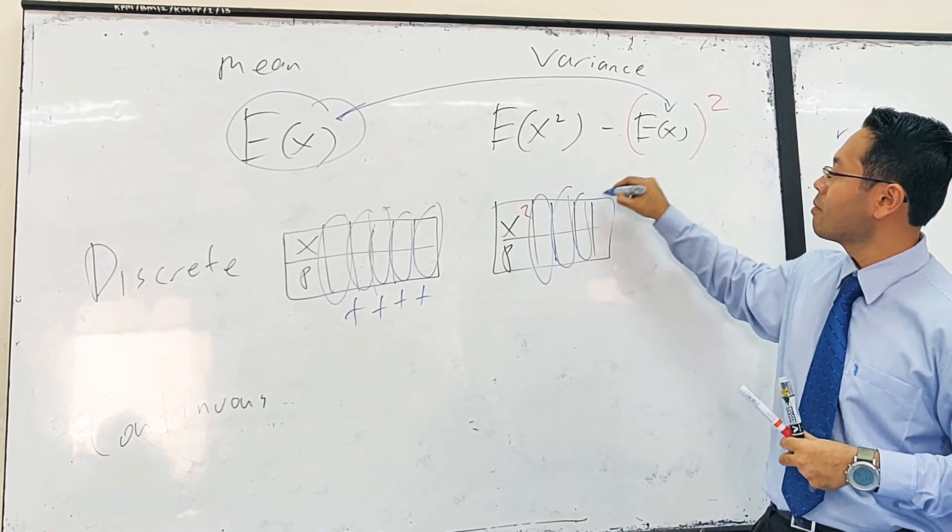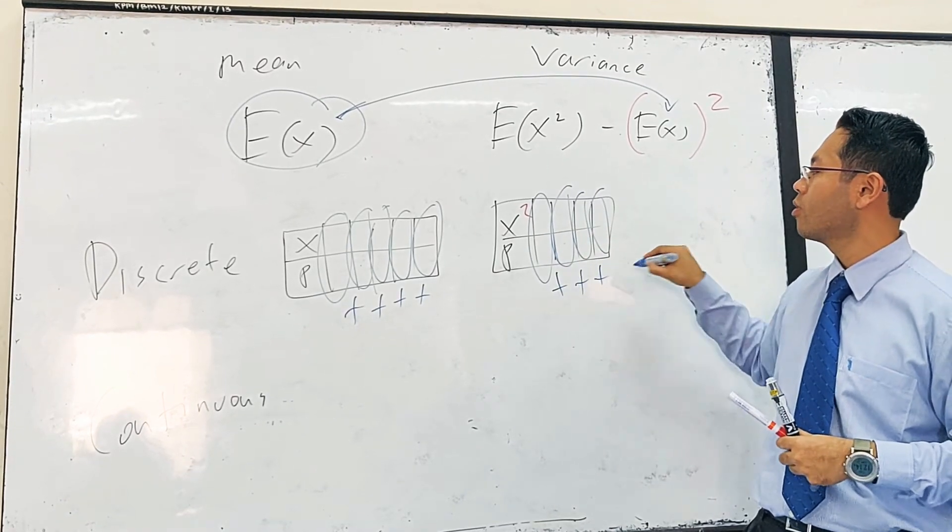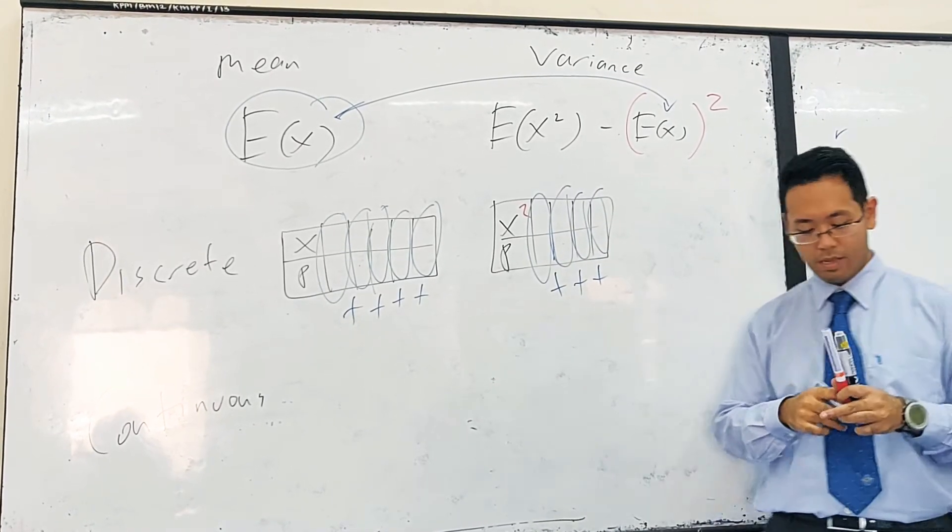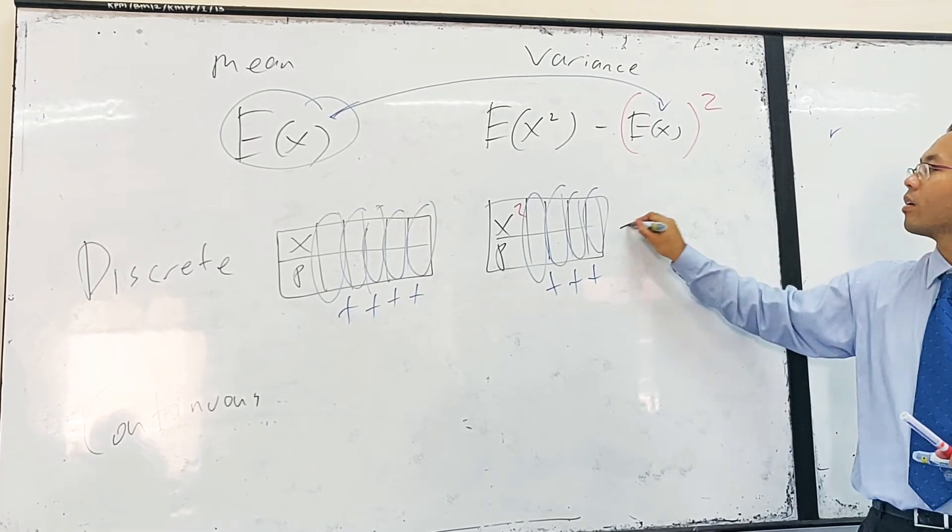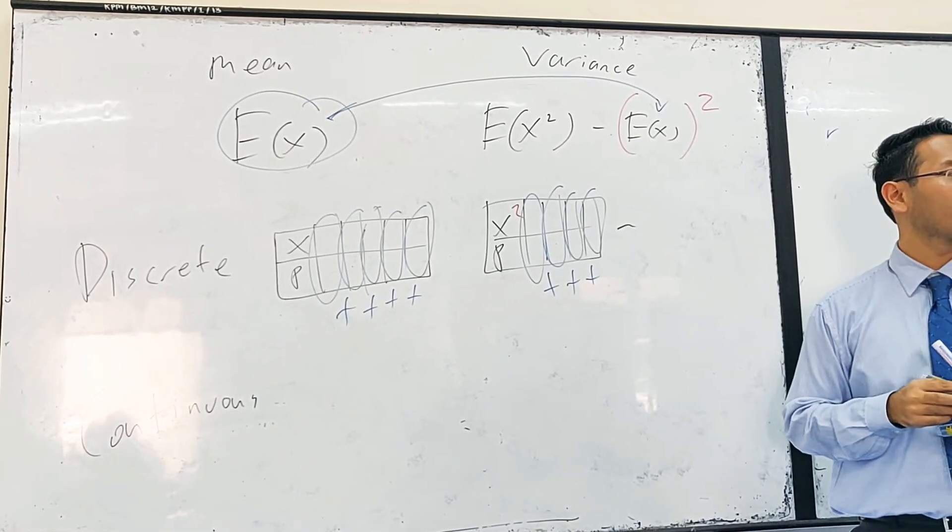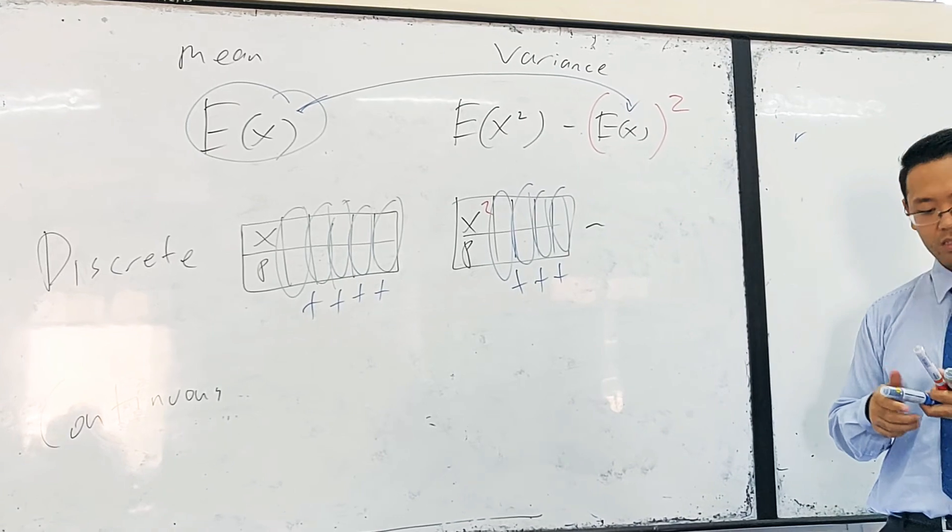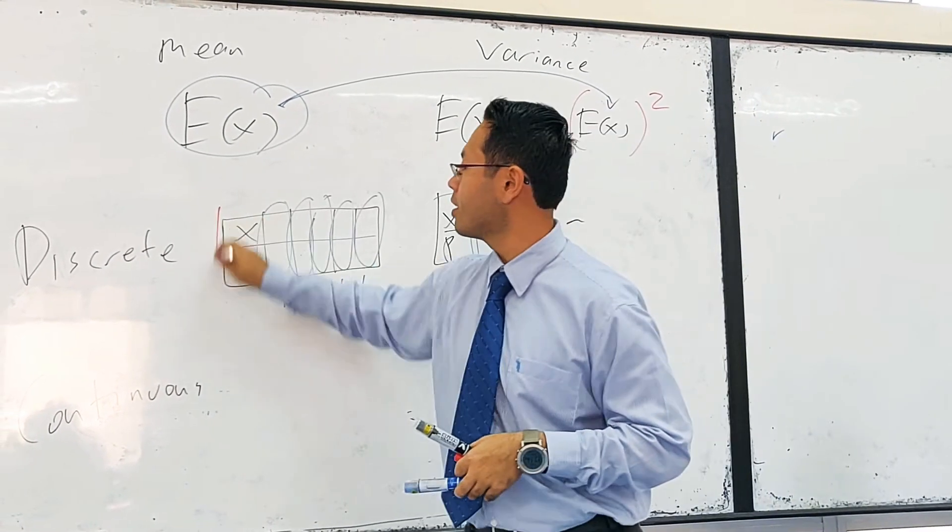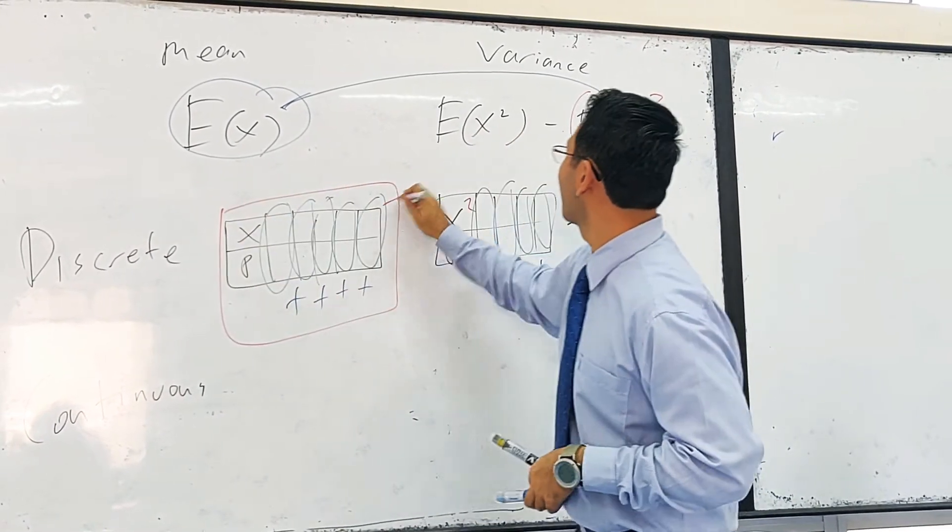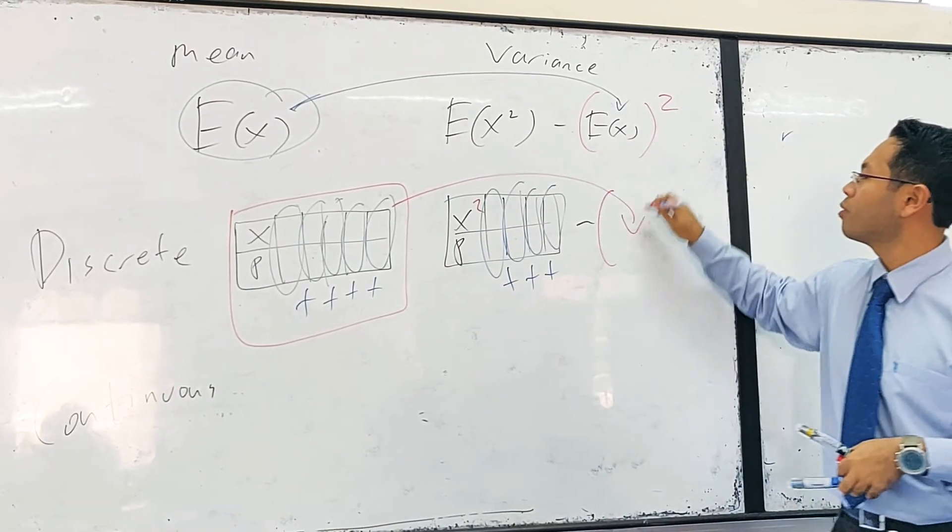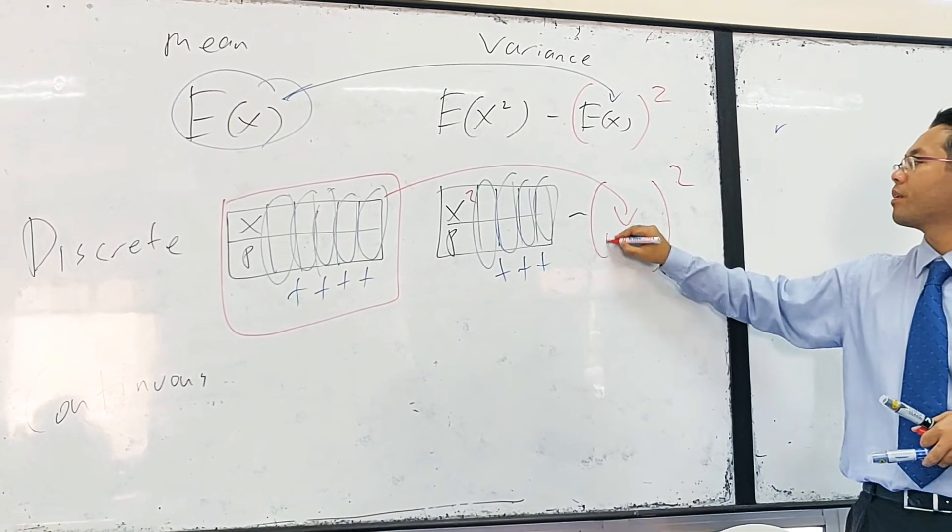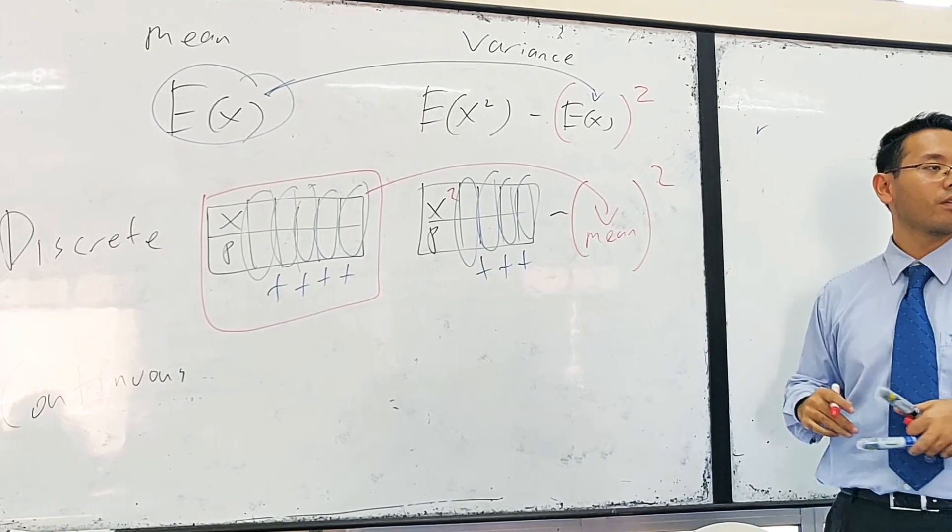And you repeat the same process again. Times, times, times, times, times, and then you add them up. Minus what? Minus the mean that you got over here. Minus the mean squared. It's squared for me. Okay?